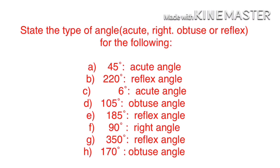An angle measuring 105 degrees is called an obtuse angle. An angle measuring 185 degrees is called a reflex angle. An angle measuring exactly 90 degrees is called a right angle. If an angle measures 350 degrees, it is a reflex angle. An angle measuring 170 degrees is called an obtuse angle.